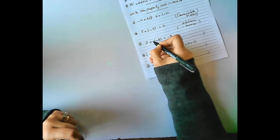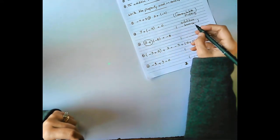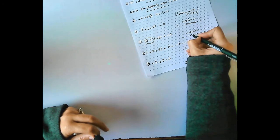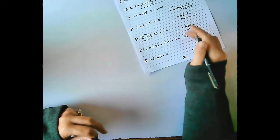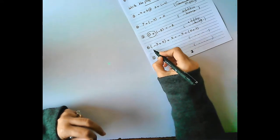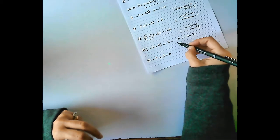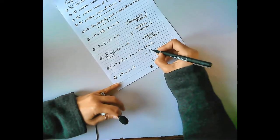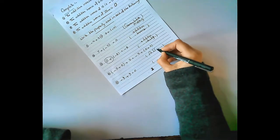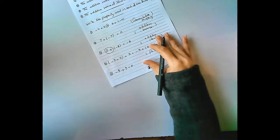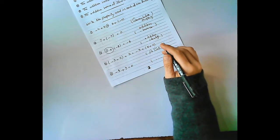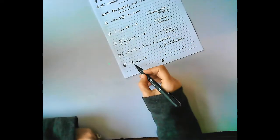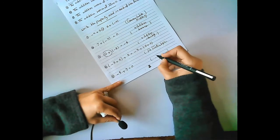0 plus negative 8 — that is the additive identity. Number 4: (negative 3 plus 5) plus 2 equals negative 3 plus (5 plus 2) — that is the associative property. Negative 9 plus 9 equals 0 — that is the additive inverse.